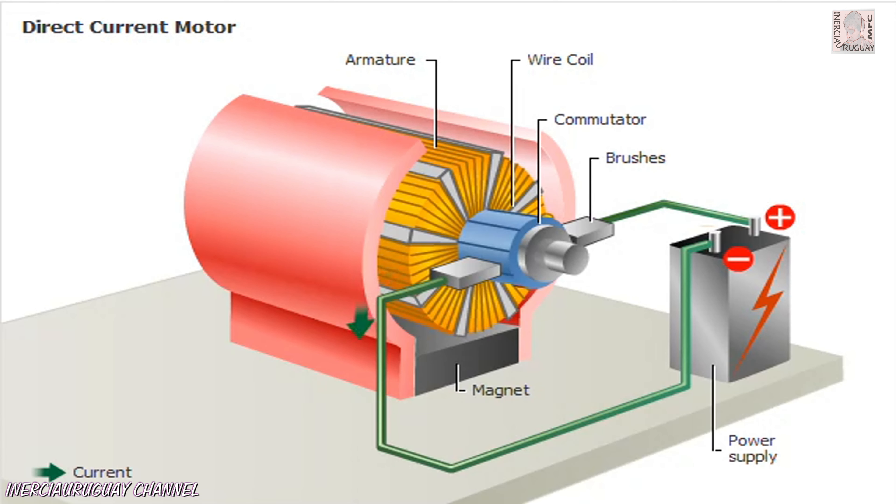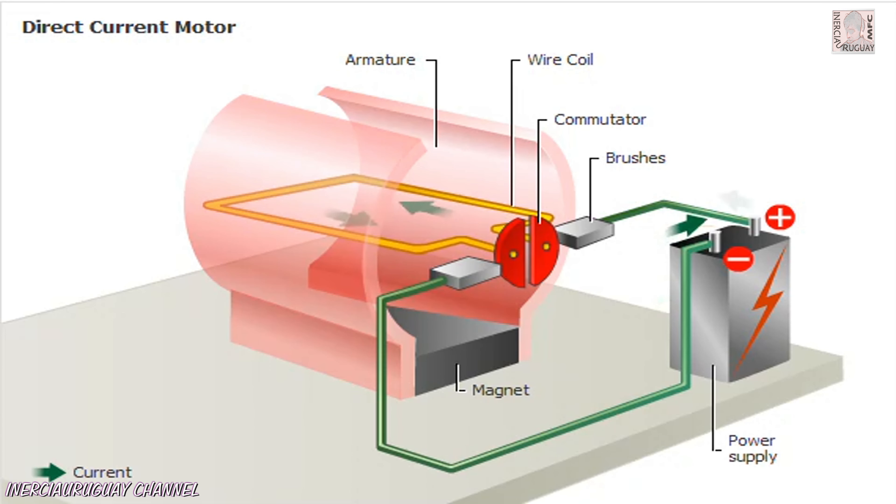A source of electricity is connected to brushes, which make contact with the commutator on the armature. The commutator is a kind of switch that changes the direction of current flow in the coil as it turns.